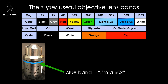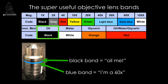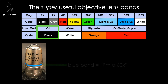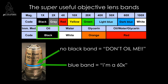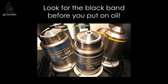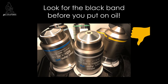Just above that band, the presence of another band tells you that it is an oil, water, or glycerin immersion objective lens — with a black band meaning that it's supposed to be used with immersion oil. If an objective lens is not meant to be used with immersion oil, it'll still have the band that indicates the magnification, but there will not be a black band or any band above the magnification band. So this makes it really easy: if you see the black band, oil the lens. If you don't see the black band, do not oil the lens.